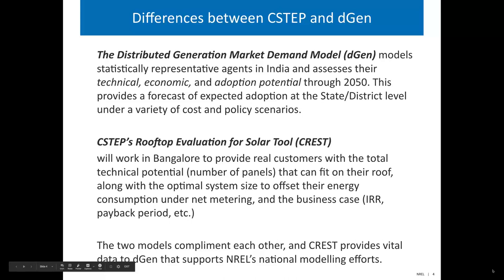Today we're talking about two different models — DGEN, which is NREL's model, and CREST, which is C-STEP's model. These two models have been developed side by side. They aren't interlinked, but they share a lot of data. DGEN is a statistically representative agent-based model: we simulate buildings, customers, and rooftops in India — not actual buildings, but statistical representations. DGEN walks through technical, economic, and adoption potential. Technical potential looks at what's feasible to put on the rooftop — how much developable rooftop area exists across a district, state, or the entire country.